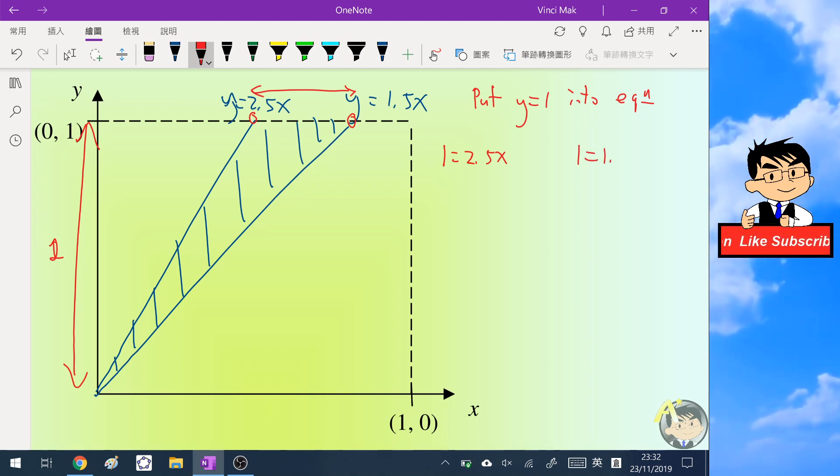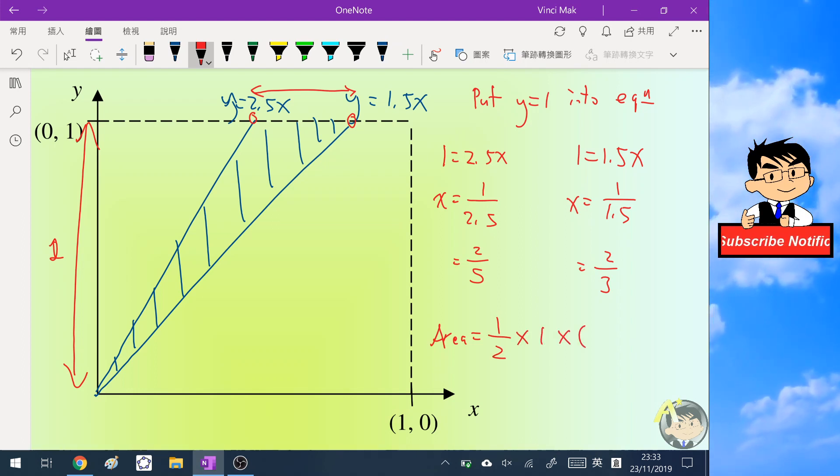And another equation we get 1 equals 1.5x. So the first equation gives x equals 1 over 2.5, which is 2 over 5. And the other equation gives 1 over 1.5, which is 2 over 3. So the area of this triangle is one half times 1 times (2/3 - 2/5), and the 2 will cancel out, so we get 1/3 - 1/5.